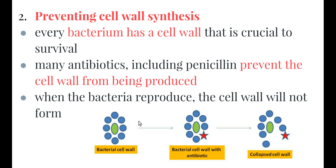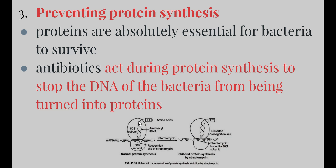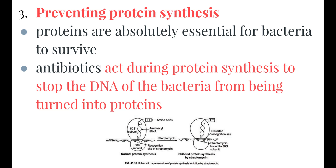Many antibiotics such as penicillin prevent the cell wall from being produced. So when the bacteria reproduces, the cell wall will not form and therefore the bacteria will not survive. The third way that antibiotics can kill bacteria is by preventing protein synthesis. Proteins are absolutely essential for bacterial survival, just as they are for us. Antibiotics can act during protein synthesis to stop the DNA from being transcribed from DNA into mRNA and then into the final protein strand.